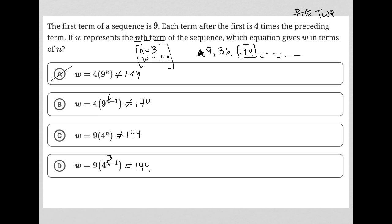So choice D is the only one that works out to get us the value that we expect to get when n is 3. Our list, which we wrote above, tells us that when n is 3, W should be 144. So that's why choice D is the best answer.